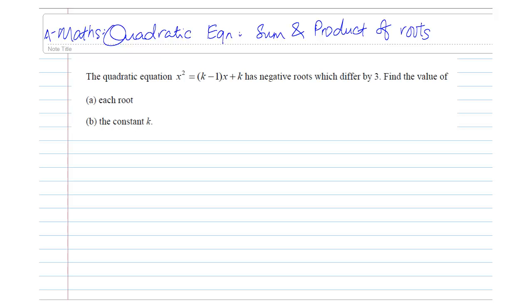Let us take a look at the question. The given quadratic equation has negative roots which differ by 3. Find the value of each root and the constant k.